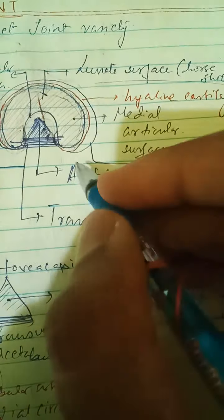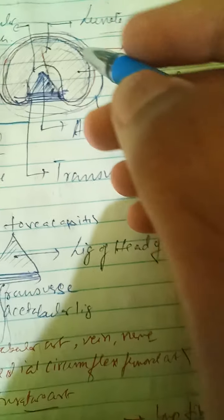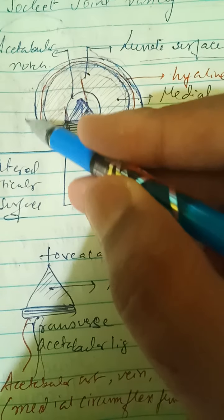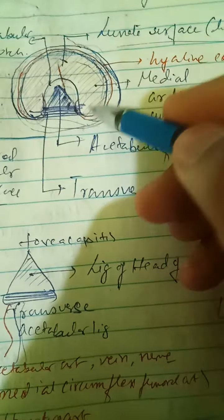All areas are covered by the acetabular labrum. Inside the acetabular labrum there is a capsule, and this capsular surface is entirely lined internally by synovial membrane.